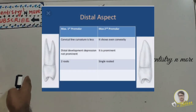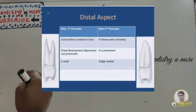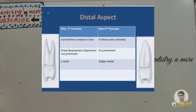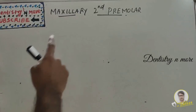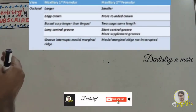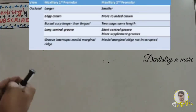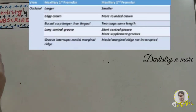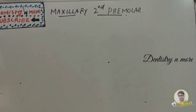On the distal aspect: there is no canine fossa and no mesial marginal developmental groove on the second premolar, which is almost similar to its mesial aspect. For the root, the bifurcation level is at the apical one-third on the first premolar, and there is a deeper developmental depression on the second premolar. For the occlusal aspect: the first premolar outline is hexagonal and the second premolar is more oval or rounded. Both have equal buccal and lingual cusps. Marginal ridges are thicker on the second premolar. The first premolar has a long central groove; the second has a short central groove with supplemental grooves. Both have two triangular fossae, with the mesial marginal developmental groove present only on the first premolar.